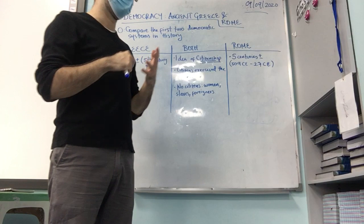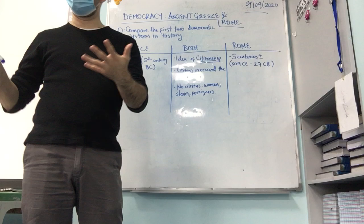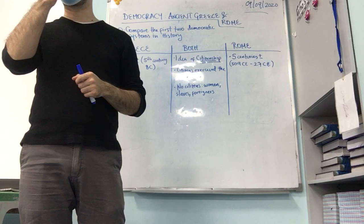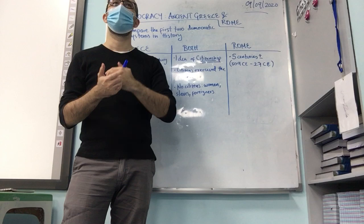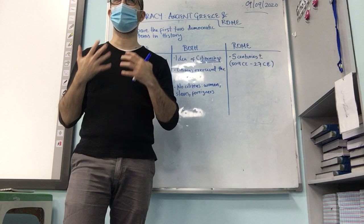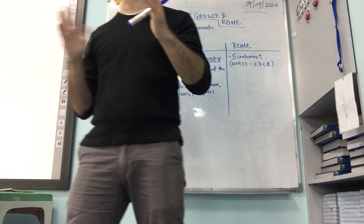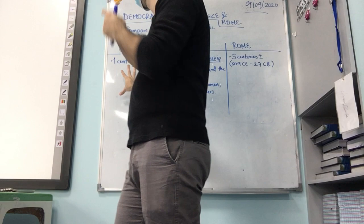Remember how we define democracy: people have the power. But here we have a problem — and this may be part of the information you can use for your selfie video — is that citizens were only men. Women, slaves, or foreigners were not included in this category. So only men. And we will see, because we start with the differences, that talking about men, we have differences between Greece and Rome.